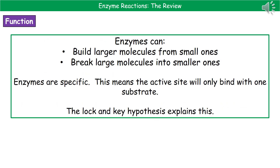When we think about what enzymes actually do, they carry out one of two main processes. They're either going to take small molecules and join them together to make a larger one, or take large molecules and break them down into smaller ones. One key feature about enzymes is that they are what's called specific, meaning the active site will only bind with one substrate.